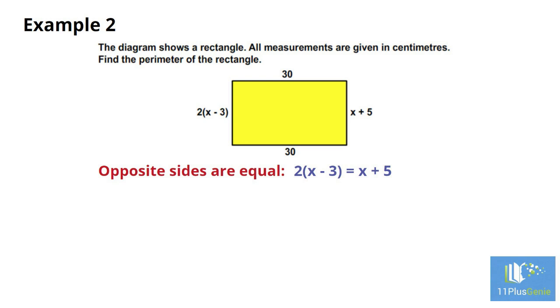We can simplify the left-hand side of the equation by multiplying the 2 with everything in the bracket. We have 2 times x equals 2x and 2 times minus 3 equals minus 6. This must now be equal to x plus 5.